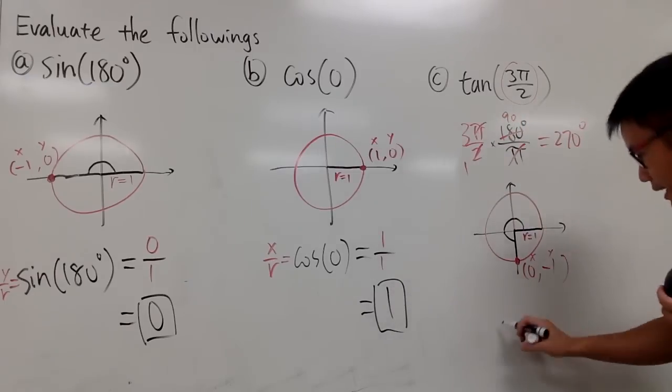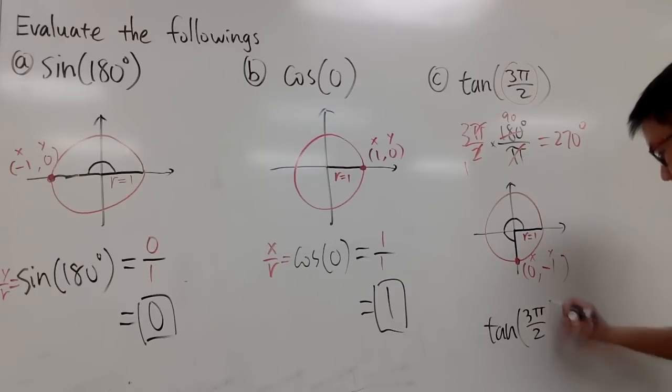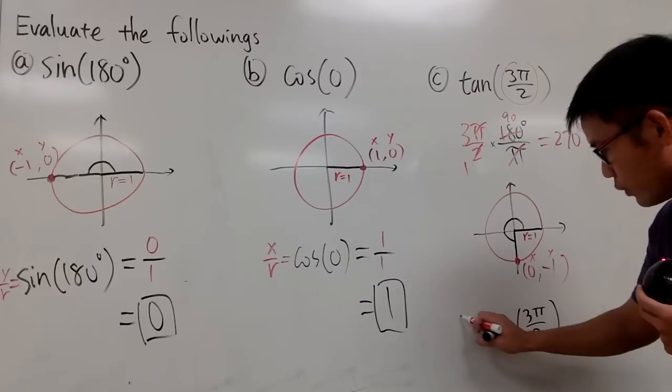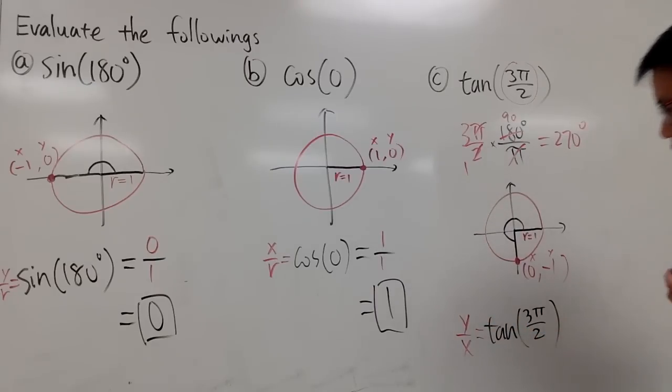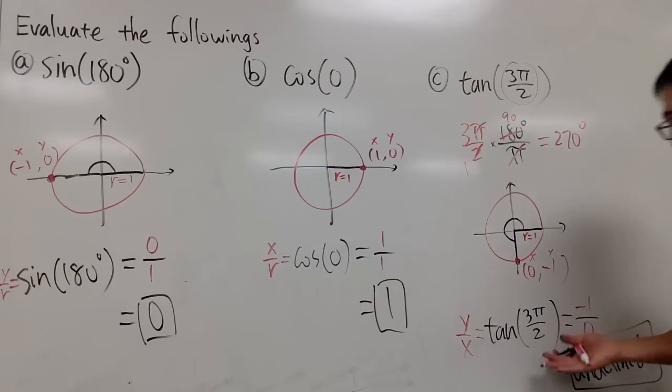Now, let's do tangent. Tangent of 3 pi over 2. And recall that tangent is equal to what over what? It's y over x. Tangent is y over x. In this case, y is negative 1. x is equal to 0. So we have negative 1 over 0. And now, what's the response for this? Undefined. We cannot do this. This right here, we don't have an answer for it. The response for this is undefined. Tangent of 3 pi over 2 is undefined.